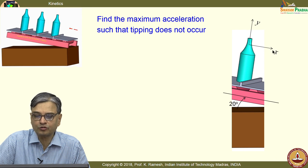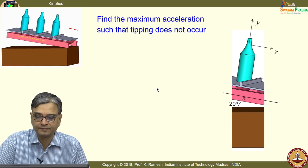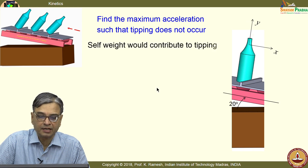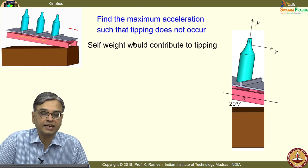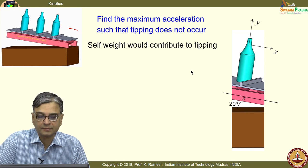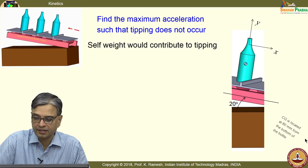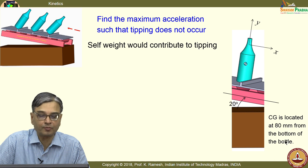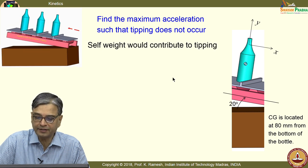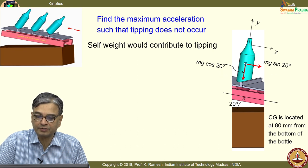It is easier to take the coordinate axis parallel to the conveyor belt and perpendicular to that. In this case, it is the self-weight of the bottle that contributes to tipping, and it is given in the problem where the CG is located — about 80 millimetres from the bottom of the bottle. The weight acts with components mg cos 20 and mg sin 20.